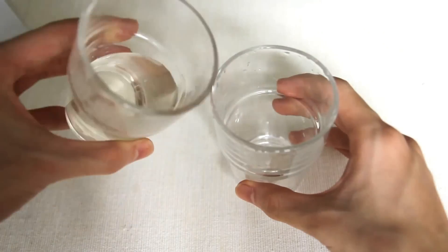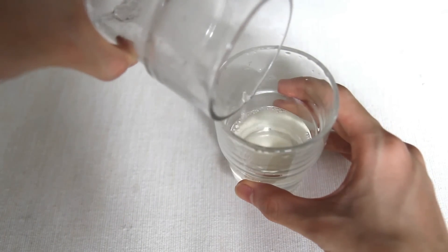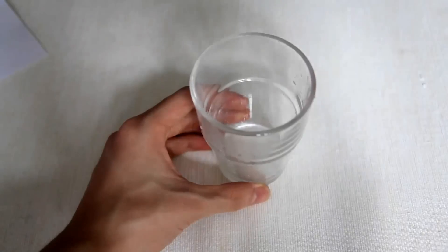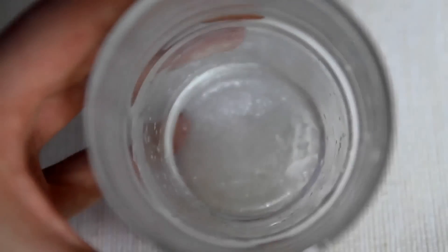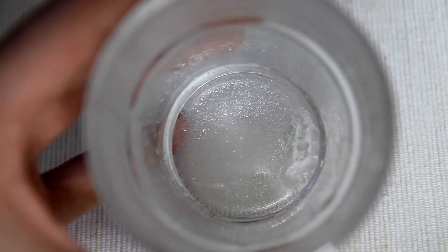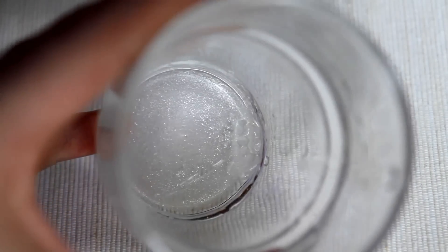slowly pour alum solution from the first jar into a clean jar. You can see some alum crystals at the bottom of the jar. These are seed crystals that you will use to grow a big crystal.